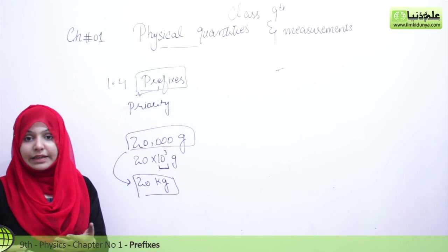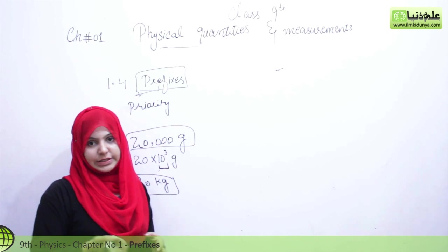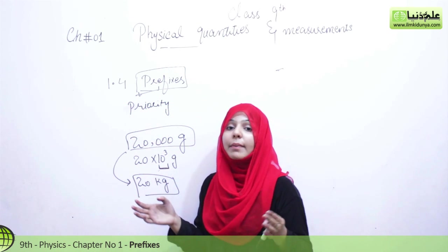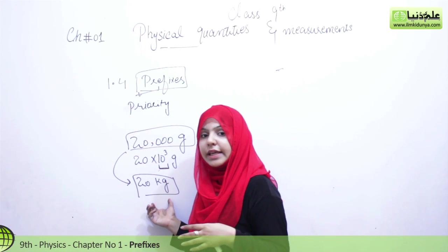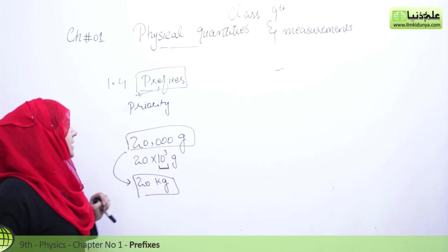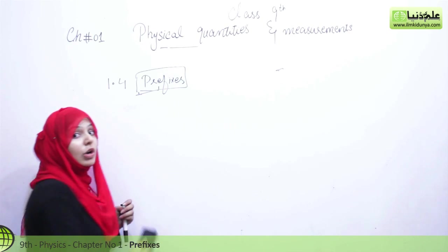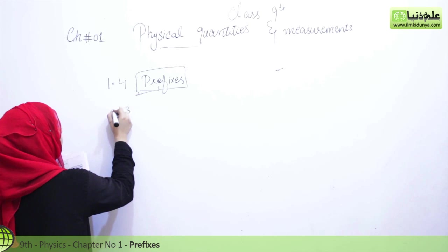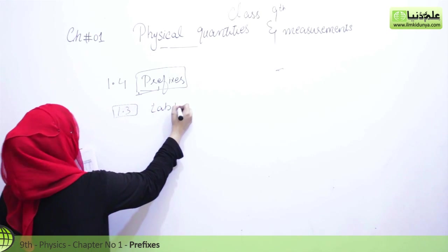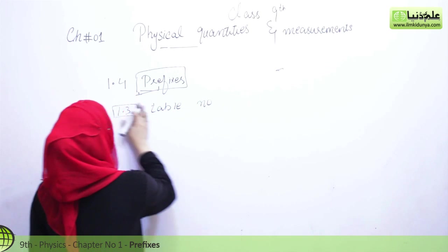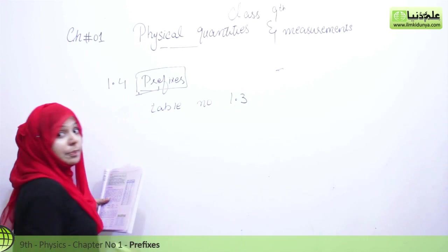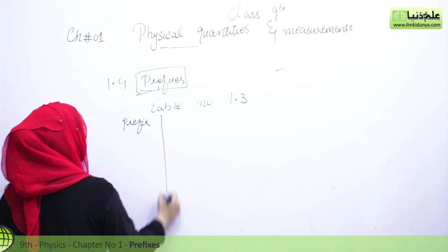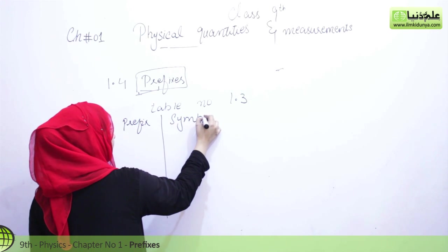That's why we use prefixes - like kilo, mega, tera, exa, we have many prefixes which we will study now. And what they have done is they have made our very large values, our very large readings, small, concise. Now we are starting. Until we know the table, we cannot do examples. And it is table number 1.3 on page 7. We have some prefixes which we will use further and do their examples. Then you will understand more clearly why we are using them.